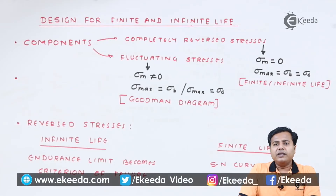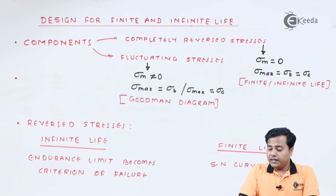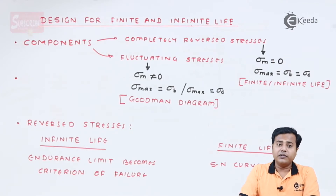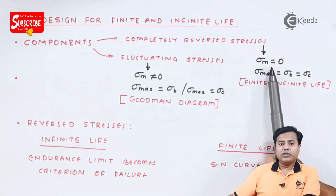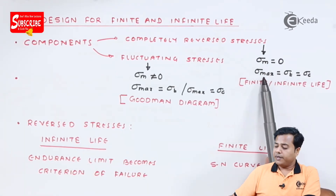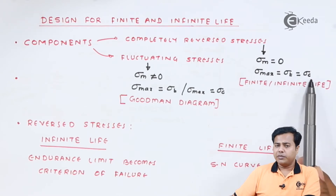In reality, mechanical components undergo two kinds of loading. They come under cyclic loading conditions. The first kind is reverse loading, or completely reverse loading, and the second case is fluctuating loading. In case of reverse loading, as we have seen in previous sessions, the mean stress value is always zero, whereas the maximum stress will be tensile as well as compressive.